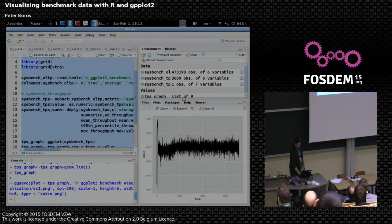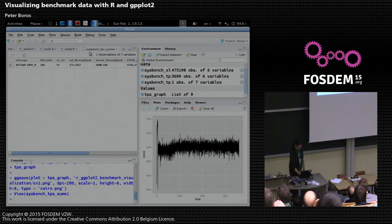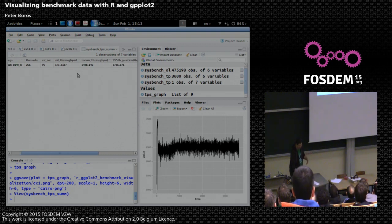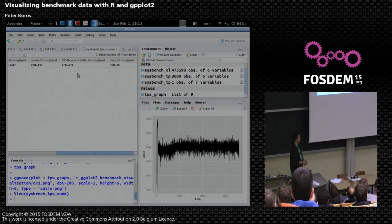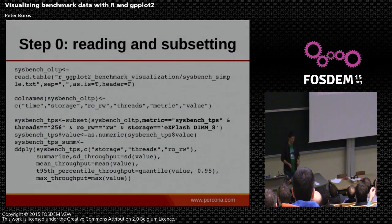R has a nice IDE called RStudio. Here is the aggregate data frame — it's not too visible, but it calculates, for the given benchmark, the standard deviation of throughput, mean throughput, the 95th percentile, and the maximum. Each of these benchmarks are an hour long. So for each case, we have kind of a tabular data as well.